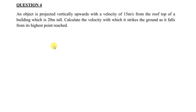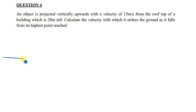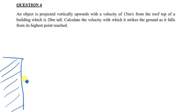So we were talking about this question. The first thing you need to do is understand the question. The question says an object is projected vertically upwards with a velocity of 15 meters per second from the rooftop of a building which is 20 meters tall. So you have a building, and this building is 20 meters tall — from the bottom to the top is 20 meters.